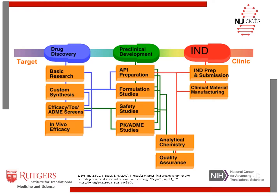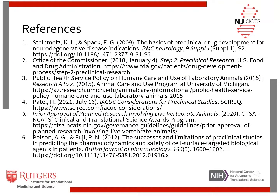To summarize, following identification of a drug target and candidate compounds, several early research activities can contribute to the selection of a lead candidate for preclinical development. These activities provide the basis for an Investigational New Drug application to the FDA for permission to initiate clinical testing in humans. Shown are the enumerated references used. Thank you for taking the time to listen to this presentation.